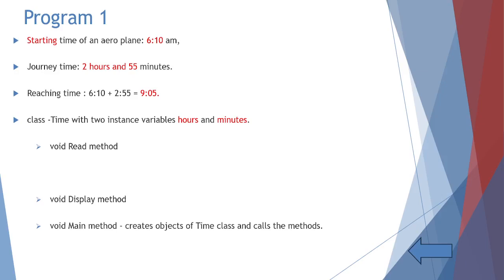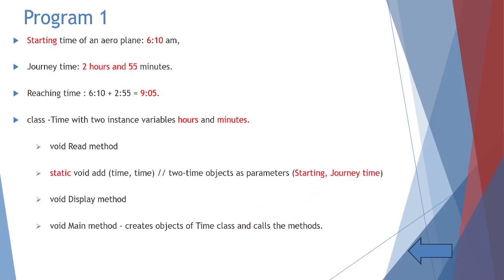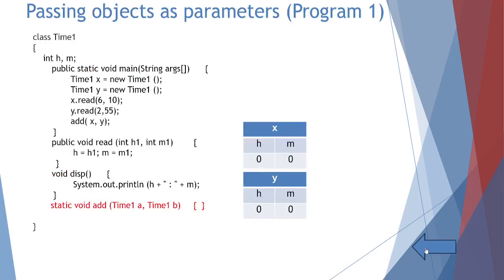We create a class called Time with two instance variables: hours and minutes. It has a read method, display method, main method, and a static void add method which receives two Time objects — let's say Time a and Time b. The first object is the starting time, the second is the journey time. Class Time1 has instance variables h and m, and four methods: main, read, display, and add.